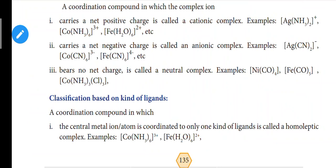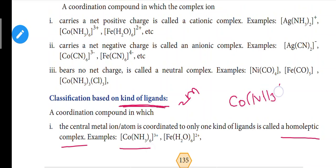Now, based on kinds of ligand, there are two types: homoleptic complex and heteroleptic complex. Homoleptic means same ligand — if all ligands in the coordination complex are the same, it is a homoleptic complex. If there are different ligands, it is a heteroleptic complex. For example, Co(NH3)6 — here all ligands are NH3, the same type.